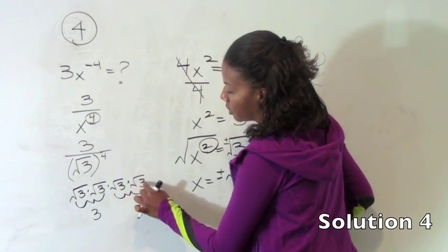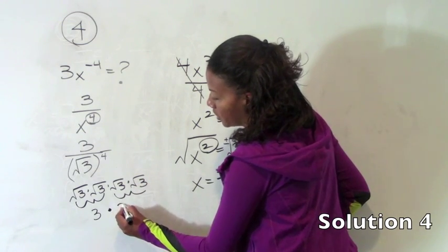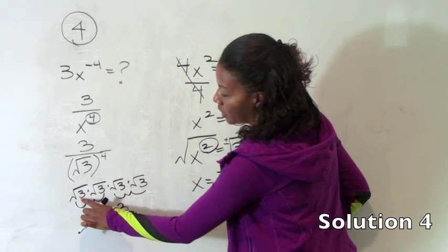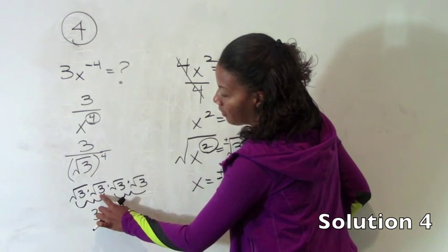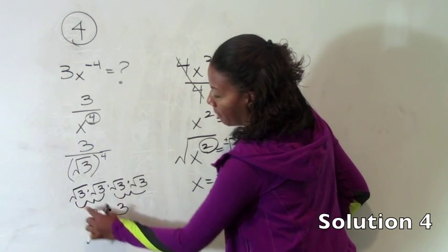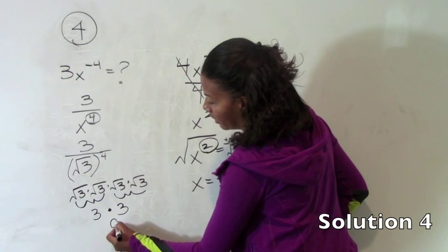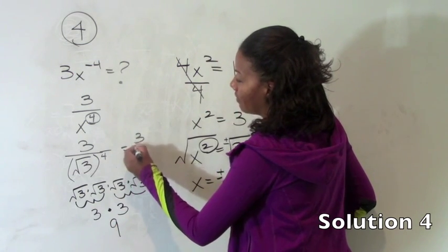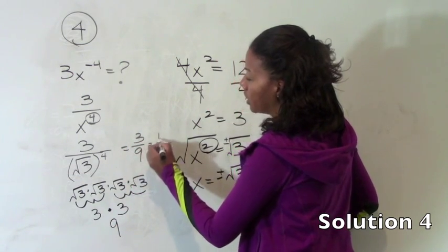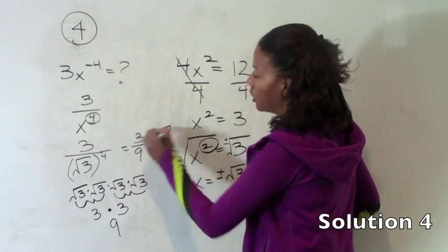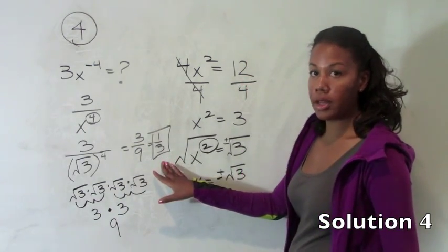The square root of 3 times the square root of 3 is the square root of 9, which is just 3. So notice the square root times itself is just that underlying number. So 3 times 3 is 9. So we get 3 divided by 9, which is simply 1 3rd. So our answer here for number 4 is 1 3rd.